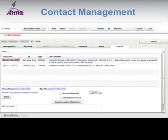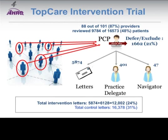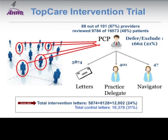In the intervention arm, there were 100 physicians in the intervention practices and 87% used the tool. They reviewed about 50% of overdue patients — approximately 10,000. They deferred screening based on their knowledge for approximately 20%, sent letters to approximately 6,000, and sent other patients directly to delegates or navigators. Overall in the intervention group, a total of 12,000 letters were sent, whereas in the control group — the automated system — 16,000 letters were sent to all overdue patients. This difference was statistically significant.